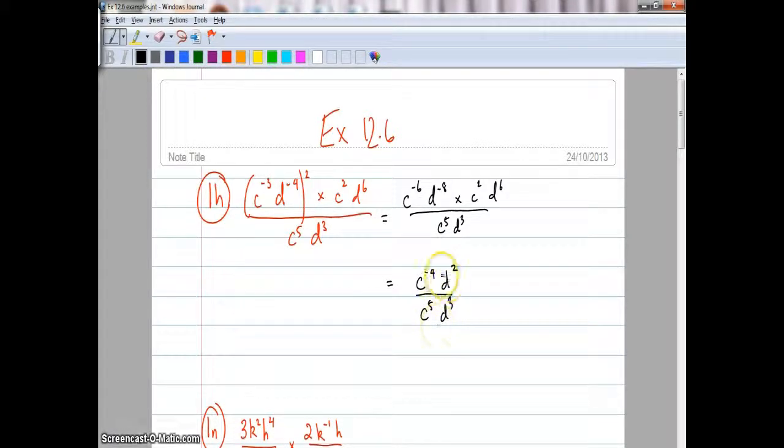C negative 6 and C2, they're multiplied together, so I can add the powers, negative 6 plus 2 is negative 4, so that becomes C to negative 4. Then D negative 8 multiplied by D6, it's negative 8 plus 6 which is positive 2. I'm doing all that out of my head but hopefully you can follow along. It's still over C5 D3.